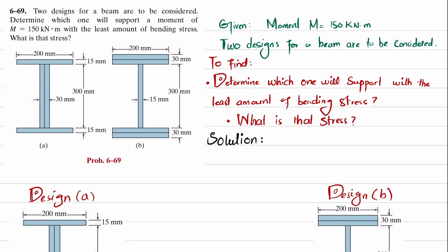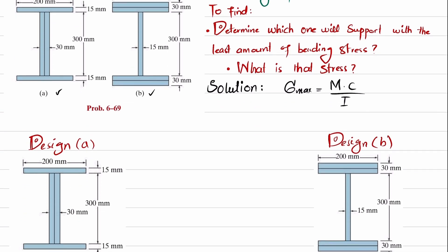The moment is given as 150 kNm, and we have to determine which design will support the least amount of bending stress and what that stress is. We know that maximum bending stress is equal to M times c divided by I. We will find I for Design A and I for Design B.